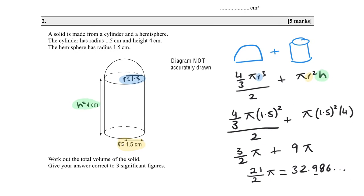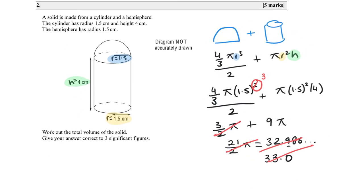Three significant figures is one decimal place, so that gives 33.0 — but this answer is completely wrong. This is a very common mistake: the radius should have been cubed in the hemisphere formula, not squared. Even with the wrong answer, you'd still get method marks. The corrected calculation gives 9/4 π + 9π, which equals 35.3 cm³ to 3 significant figures.